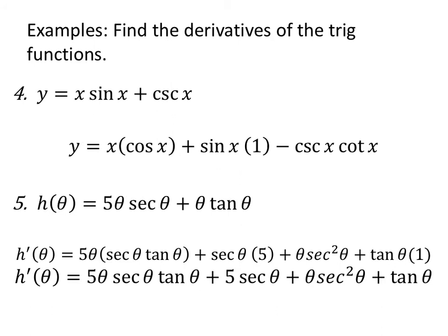Number 4: y equals x sine of x plus cosecant of x. The term x sine of x requires a product rule — first term is x, second term is sine of x. It might help to define u(x) equals x, find u prime; v(x) equals sine of x, find v prime. Then: first times derivative of the second, plus second times derivative of the first. The derivative is x cosine of x plus sine of x times 1. For the second part, the derivative of cosecant of x is minus cosecant x cotangent x. Maybe you don't want to write the multiplied by 1 — that's up to you.